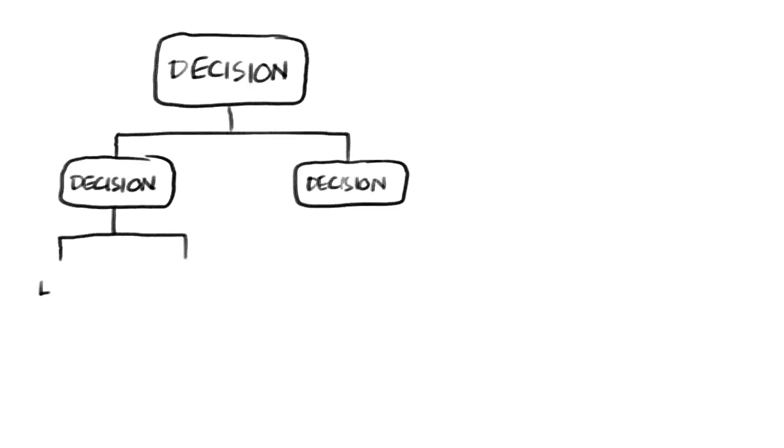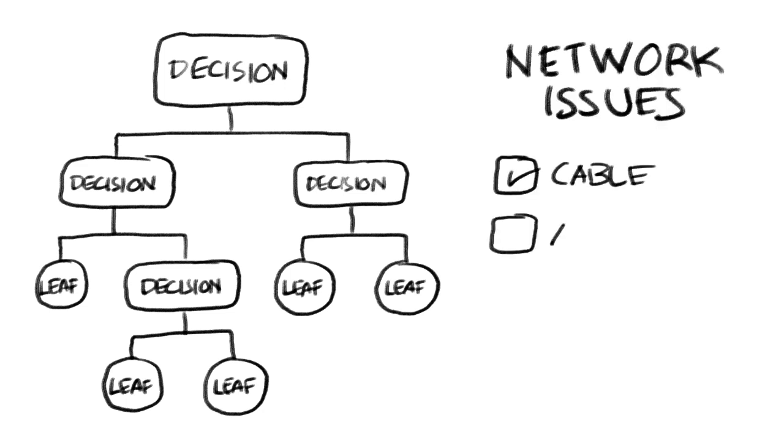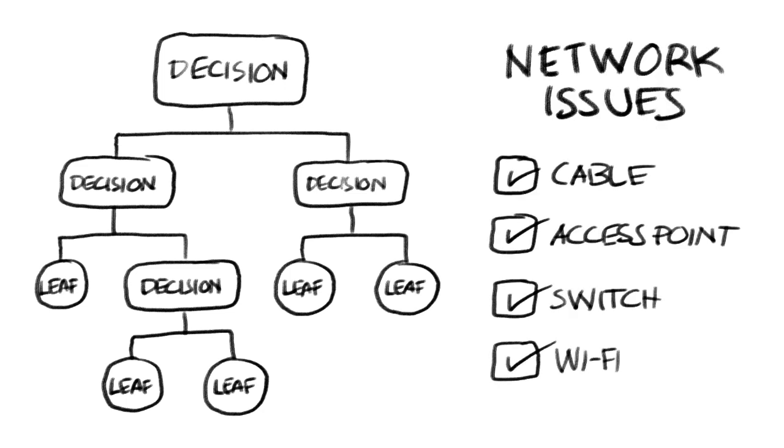Today, we'll be looking at decision trees and how they identify common network issues like faulty network cables, AP or switch health, and wireless coverage. The algorithms used include simple, random forest, gradient boosting, and XGBoost. Our example will be a simple decision tree algorithm.